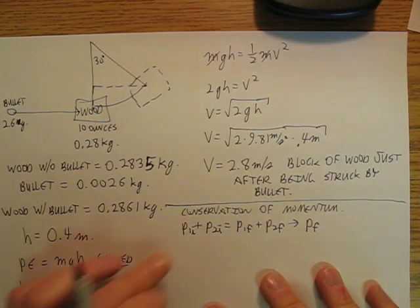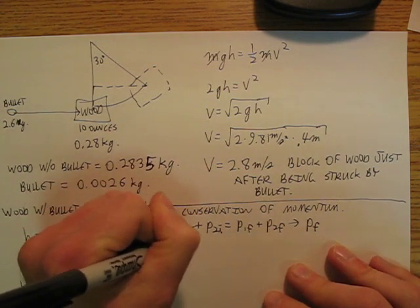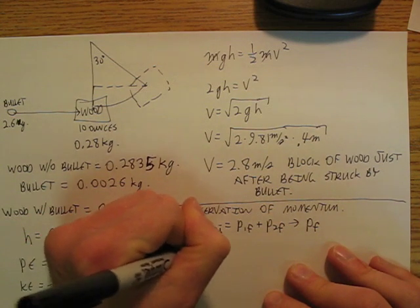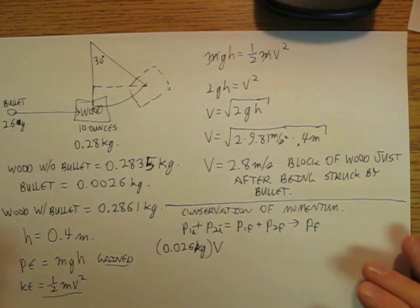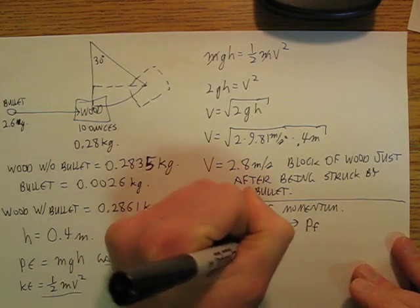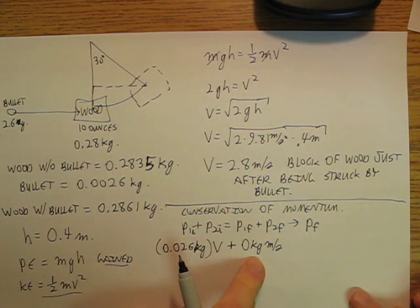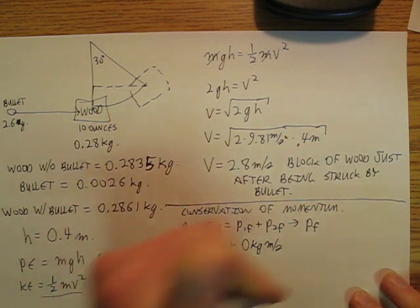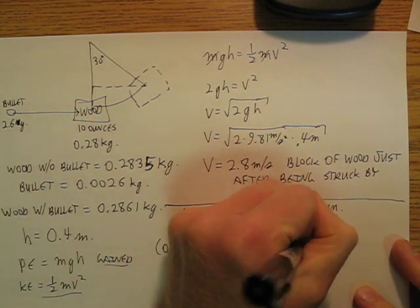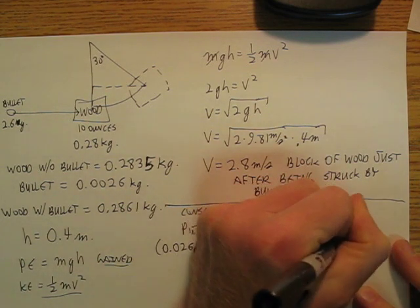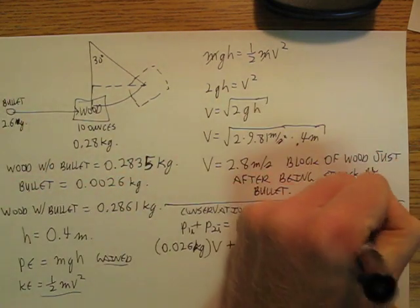So I'm going to say that 0.0026 kilograms times some unknown velocity of that bullet plus 0 kilogram meters per second, which is the original momentum of the wood when it was just hanging there, equals the wood plus the bullet, 0.2861 kilograms times 2.8 meters per second.